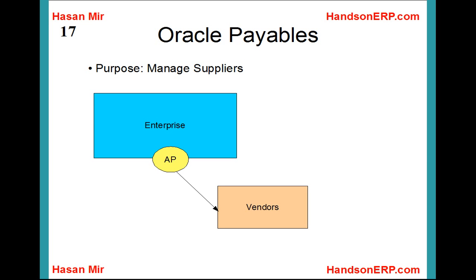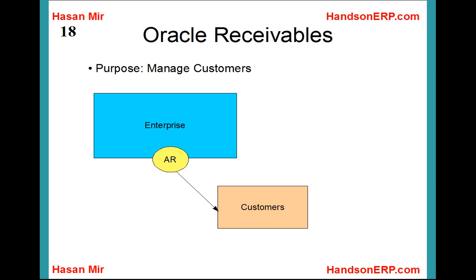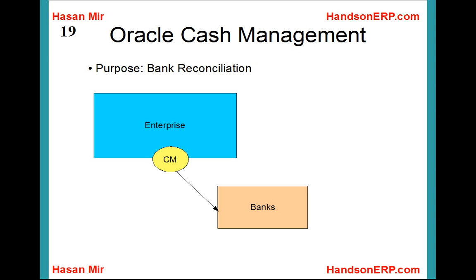To recap: the Accounts Payable module, now known as Oracle Payables, is used to manage vendors. It tells the company what you have purchased, from which vendor, when payments are due, what payment method was used, and so on. Similarly, the Accounts Receivable module, known as Oracle Receivables, helps you manage customers — what they owe you, whether they have paid, the payment method, and credit rating. The Cash Management module, known as Oracle Cash Management, helps you reconcile your bank statements at month-end, checking whether the bank has made an error and whether your books are in sync with the bank.